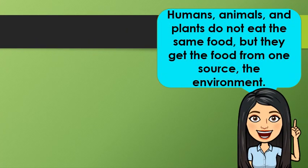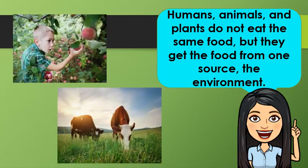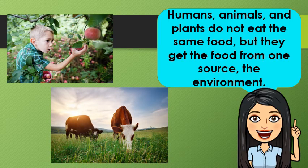Humans, animals, and plants do not eat the same food, but they get the food from one source — the environment. We humans eat food to make our body strong and healthy. Eating a balanced diet keeps our body healthy and strong. A balanced diet contains carbohydrates, fats, proteins, vitamins and minerals, and water in correct proportion.